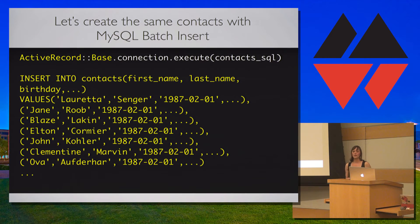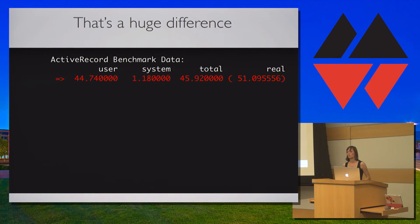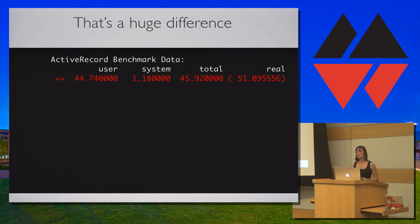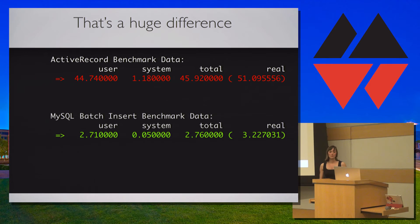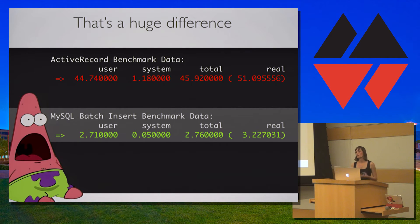Batch insert creates a MySQL query that chains all the values together instead of making a new insert statement for each contact. When benchmarking — using the Ruby standard library benchmark module — the output represents user CPU time, system CPU time, the sum of both, and elapsed real time. Creating each record individually took 45.9 seconds. MySQL batch insert took less than three seconds. That's a huge difference, though benchmarking times may vary based on garbage collection, allocated memory, and your Ruby/Rails version. Note that because we're not saving each record individually, no callbacks will be fired.